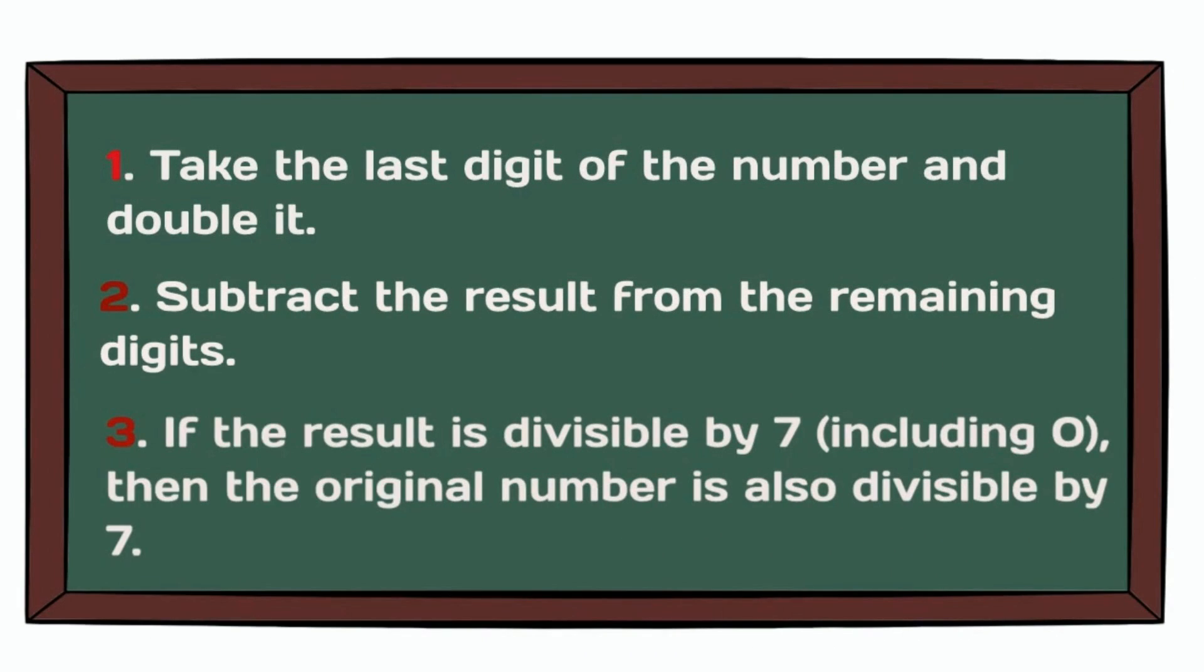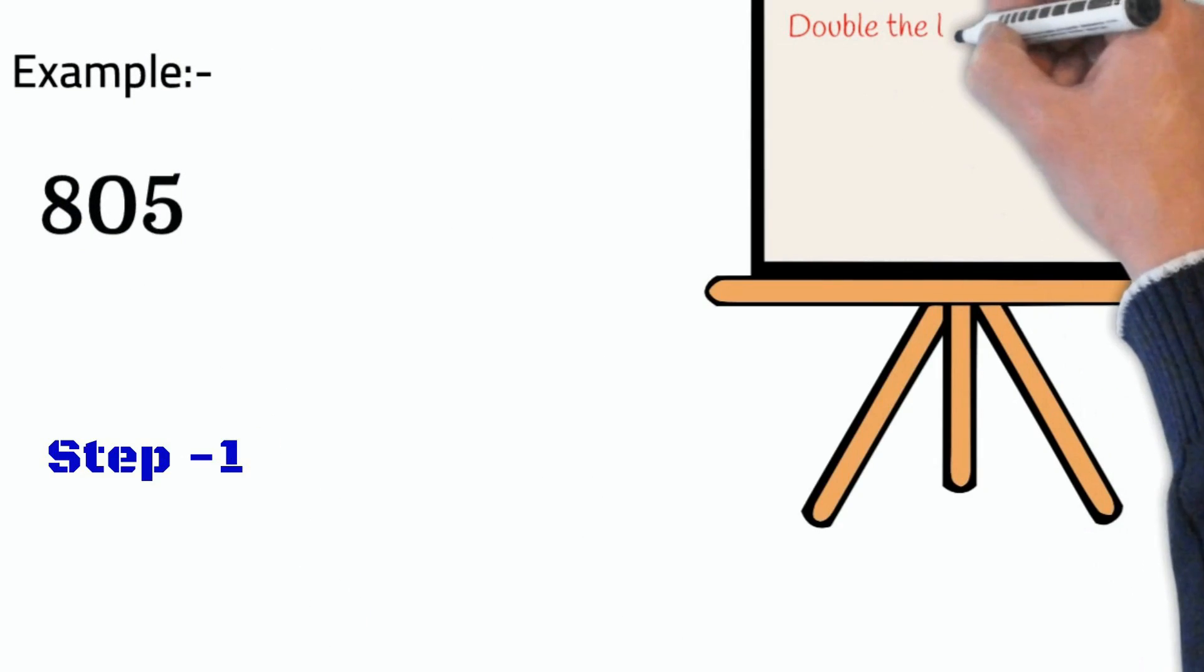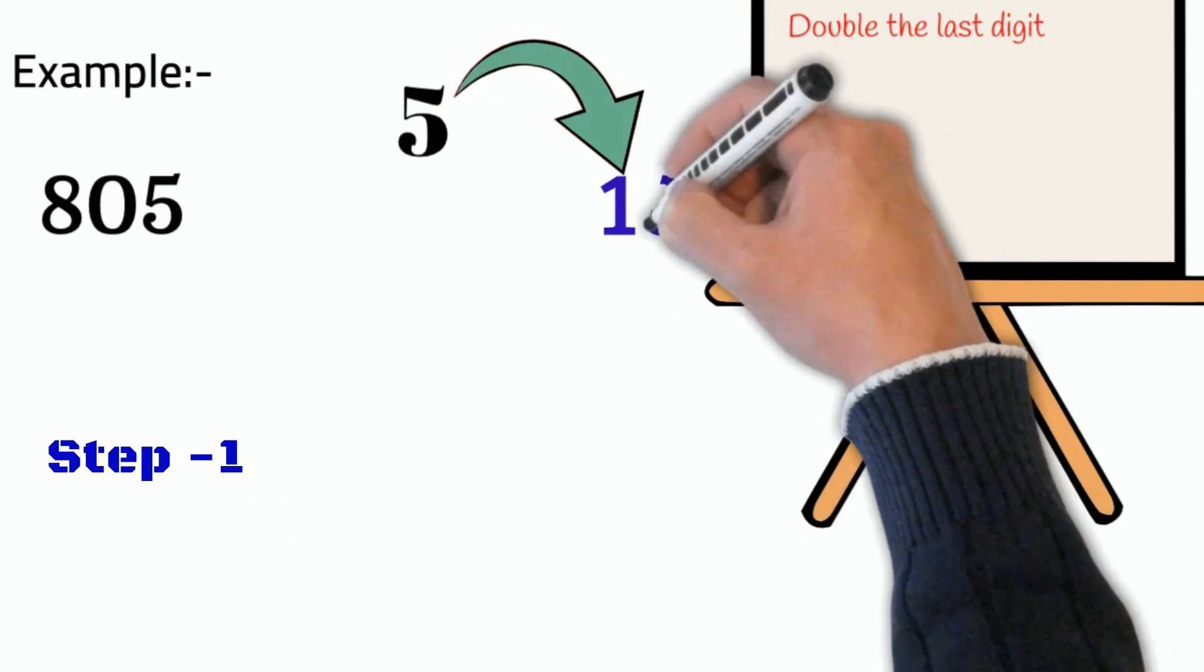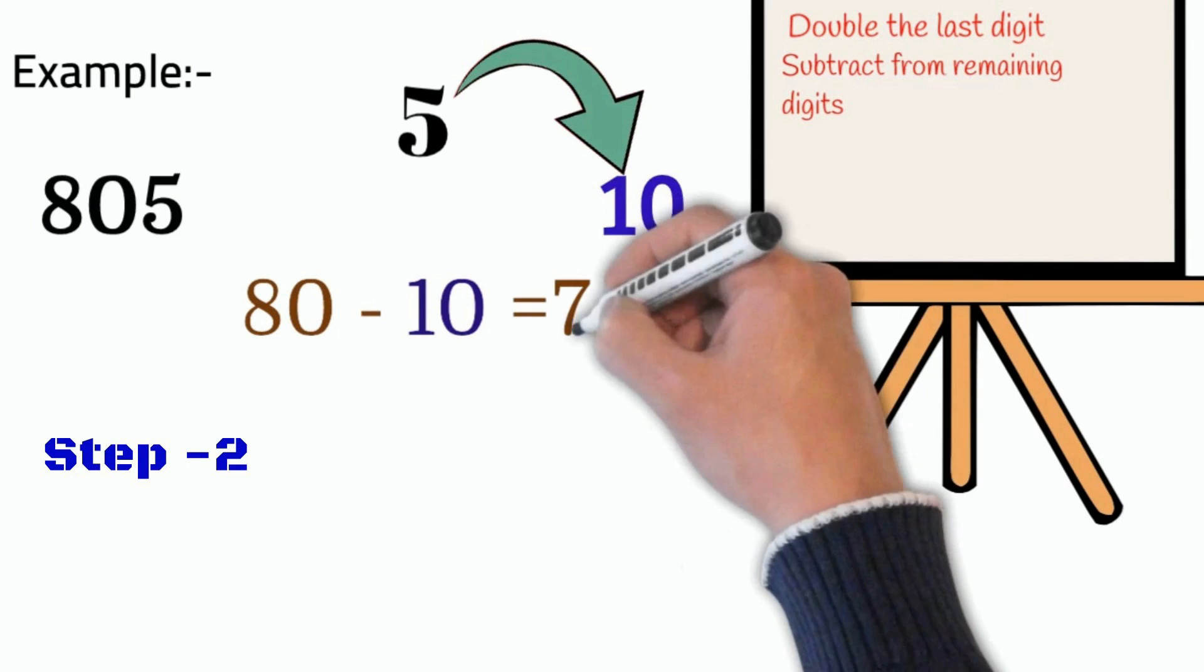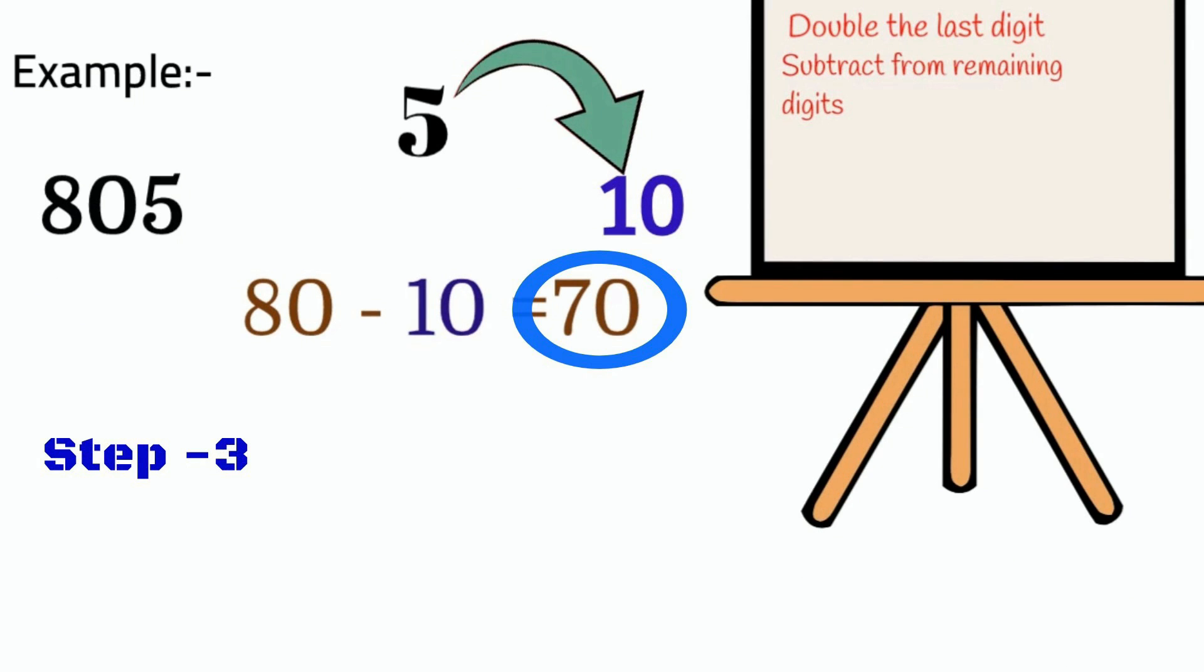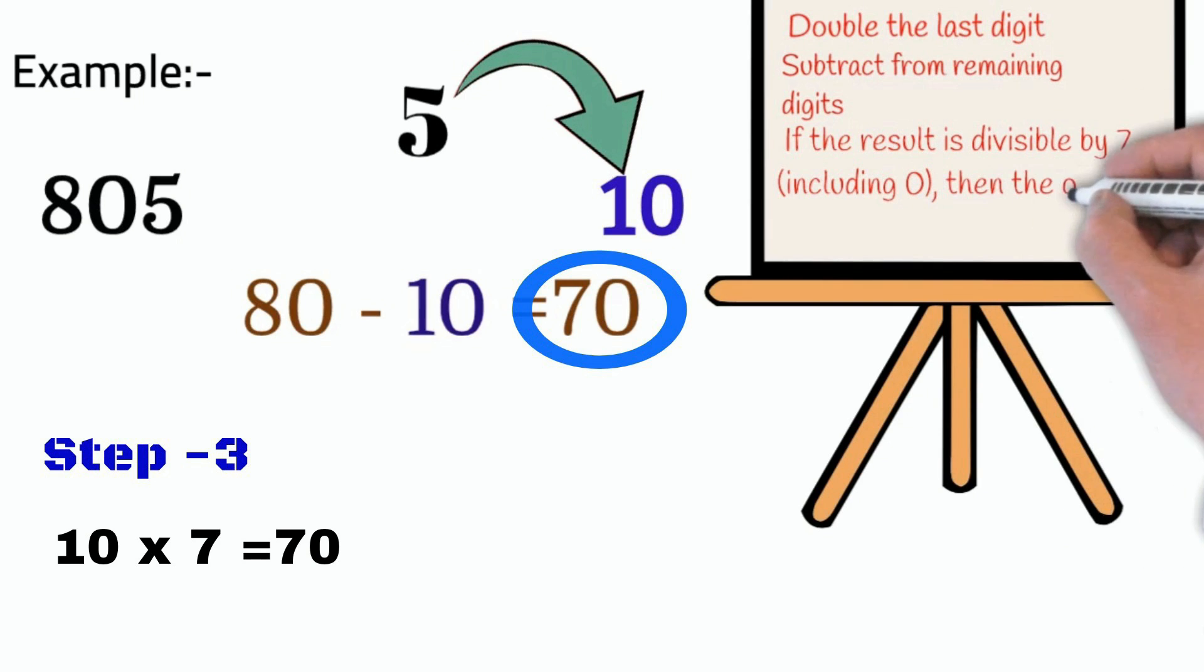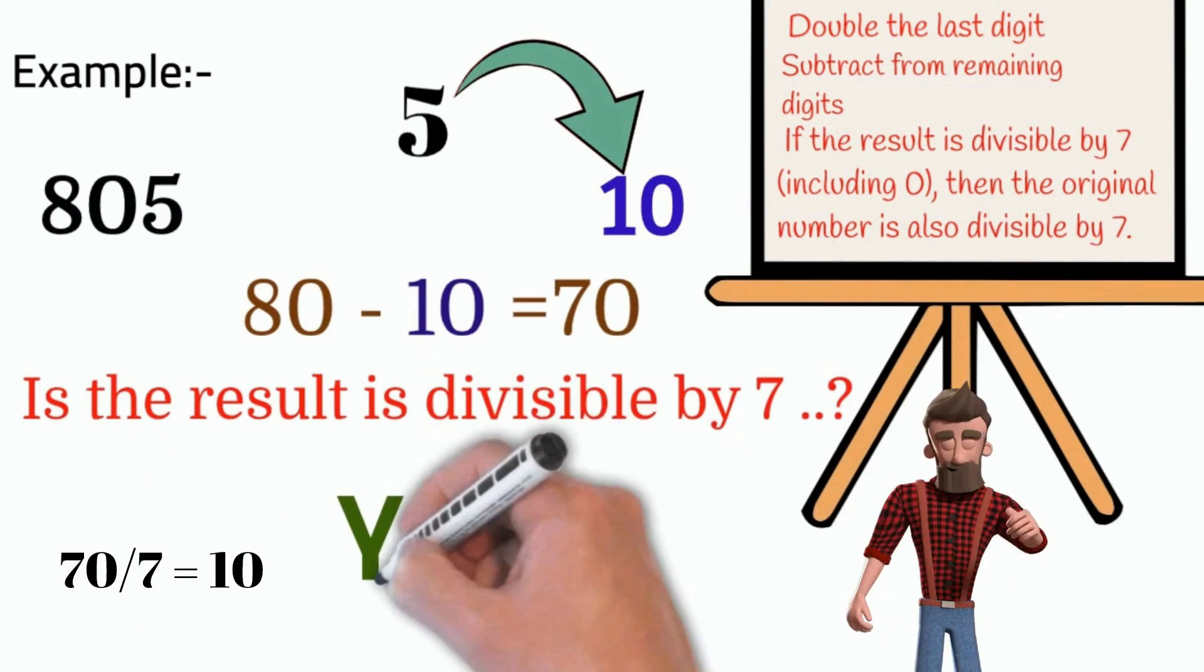Look, some examples. 805, is it divisible by seven? Last digit or unit place digit is five, double of five is ten. Remaining digits, eight zero, subtract ten from eighty, gets seventy. Is seventy divisible by seven? Yes, ten into seven is seventy. So, 805 is divisible by seven.